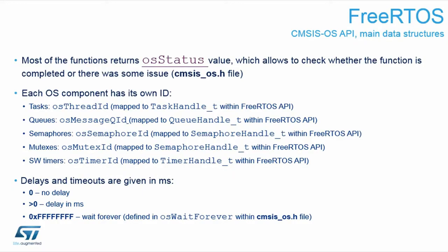However, there exists a special value called osWaitForever — that's defined as minus one in 32 bits and it defines infinite time. So if you don't want to define a timeout but you still need to wait for something forever, this is the right macro or value to put into a function and the task will get blocked without the timing mechanism.